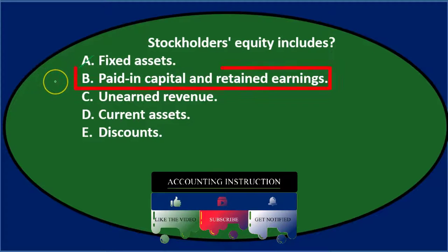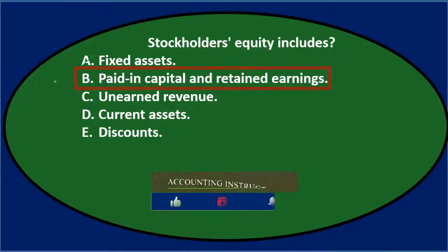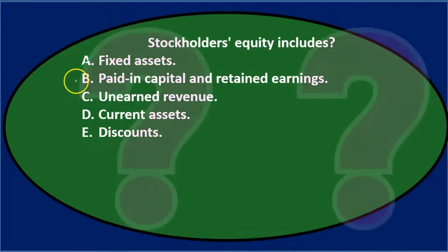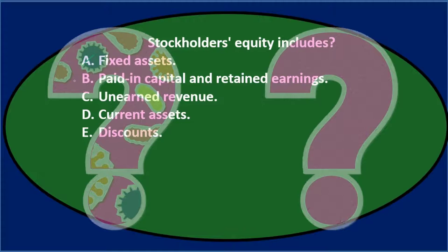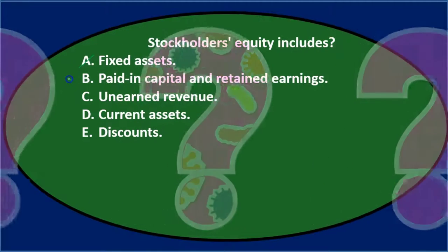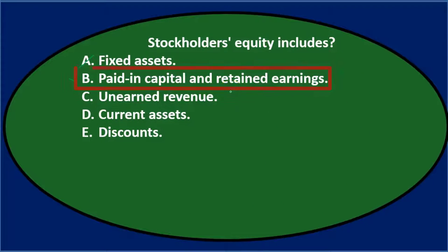B says paid-in capital and retained earnings. For a corporation we may not know what paid-in capital is, but we probably recognize retained earnings as part of the equity section. So I'll keep that for now.